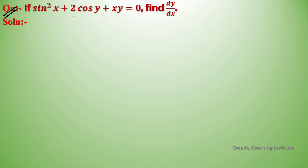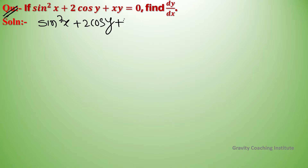Question: if sin²x + 2cos(y) + xy = 0, find dy/dx. Here, given sin²x + 2cos(y) + xy = 0, so simply differentiate with respect to x.